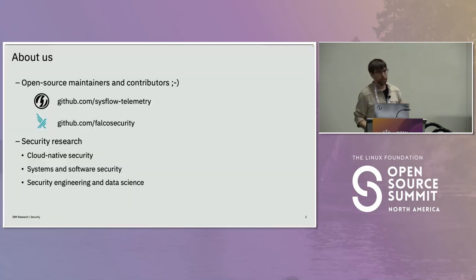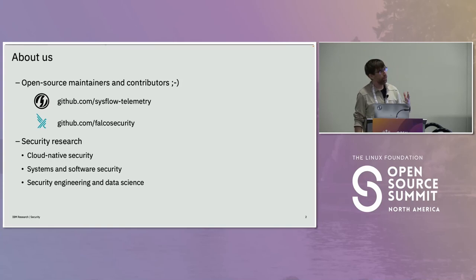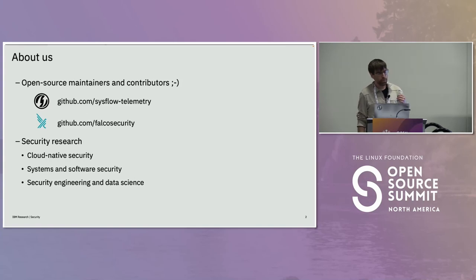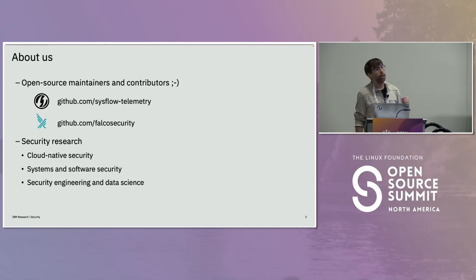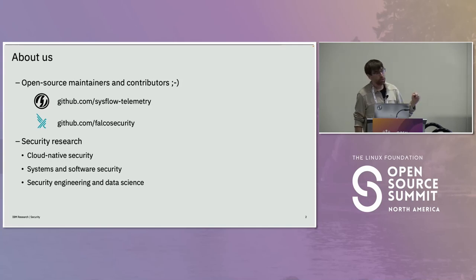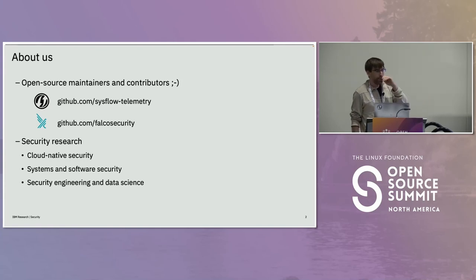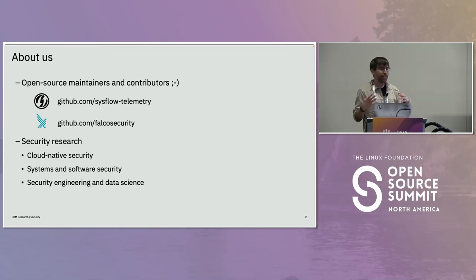We're going to talk about relational observability. A little bit about us: we're both from IBM Research, we joined about six and a half years ago around the same time with a passion for security. We are open source maintainers and contributors of two projects — one we're going to talk about today, which is the SysFlow Telemetry project. We're also contributors and maintainers of certain projects for Falco security. We're present on both of these communities and have Slack channels, so if anybody's interested, come say hello — we're happy to collaborate.